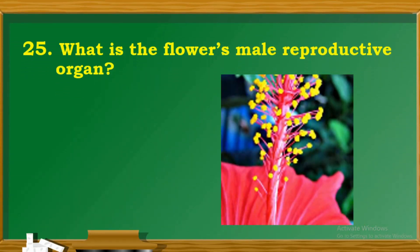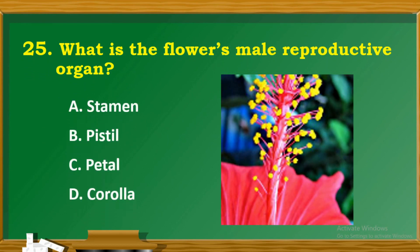Question 25: What is the flower's male reproductive organ? A. Stamen. B. Pistil. C. Petal. D. Corolla.